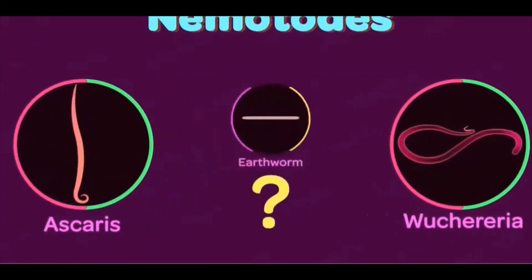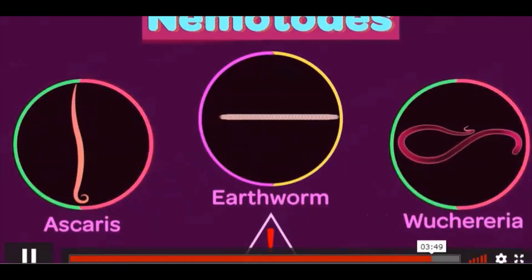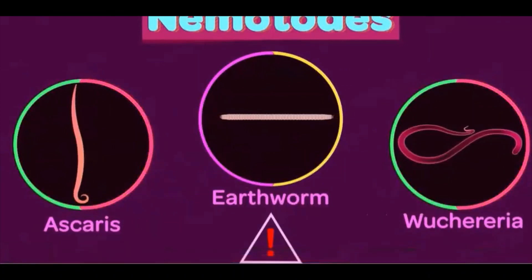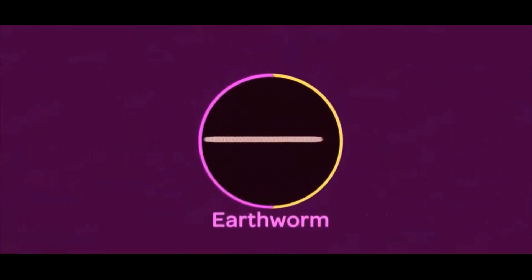Are earthworms also an example of nematodes? If you said yes, it's probably not the right answer. Earthworms do look like these roundworms, but in reality they are not part of this family. They belong to the next phylum, which is Annelida.